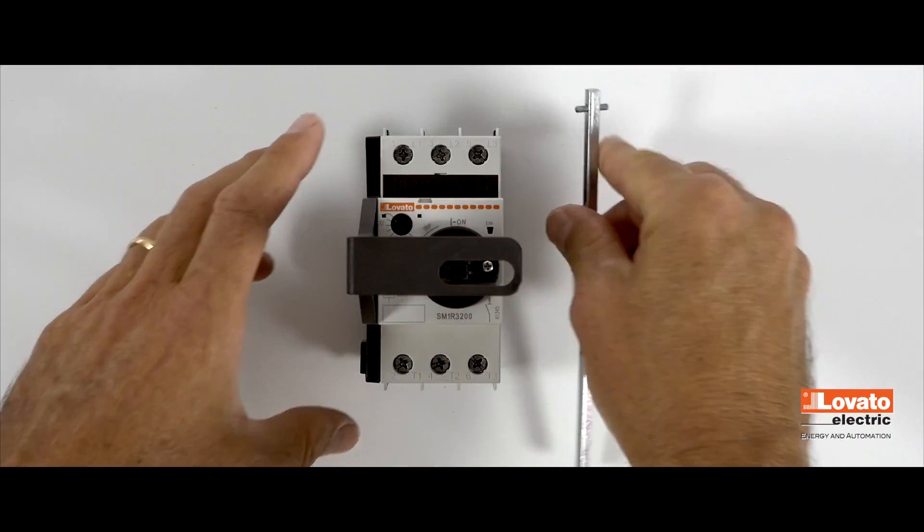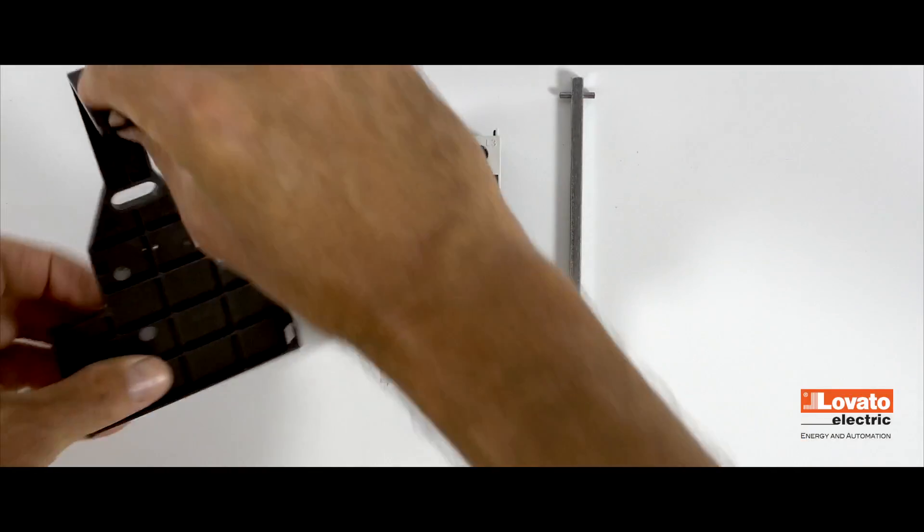If you also need to assemble the side contacts, the support must always be to the left.